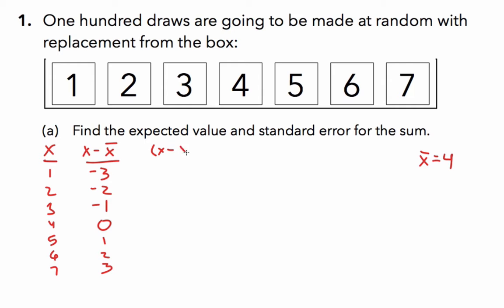Recall that these will always sum to 0, so we need to square them. Negative 3 squared is 9, and so on, we get 4, 1, 0, 1, 4, and 9.